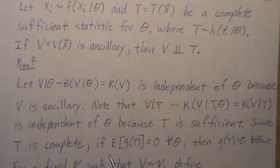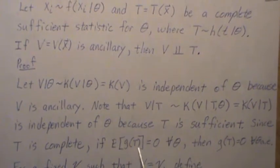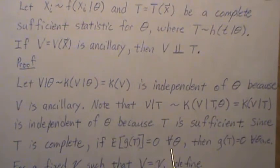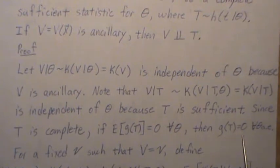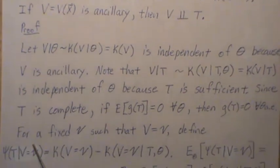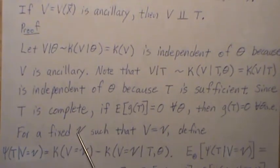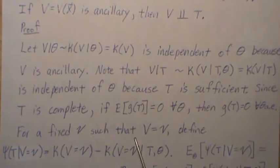Now since t is complete, if we have the expected value of some function of t is equal to zero for all theta, then the function g of t is equal to zero for all theta almost everywhere. Now for a fixed v, such that it's a realization of our random variable v.